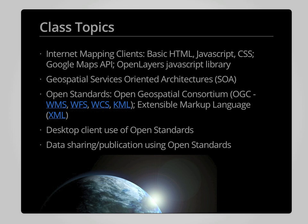Now let's change over to the topics that will be addressed in the class. Among the topics we will focus on include internet mapping clients, including the development of web pages based on hypertext markup language, or HTML, that are interactive through the use of JavaScript, and that are styled using cascading style sheets, or CSS. As part of the internet mapping client work, you will also learn some basics of the Google Maps Application Programming Interface, or API, and also work with the OpenLayers JavaScript Library as an alternative way to display geographic data within a web browser.